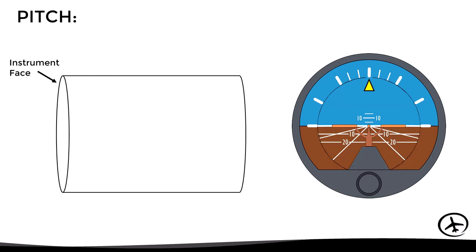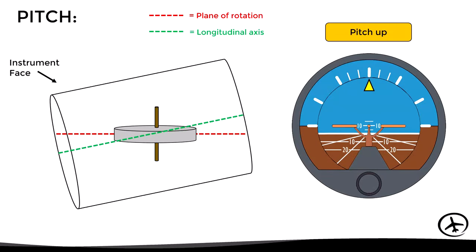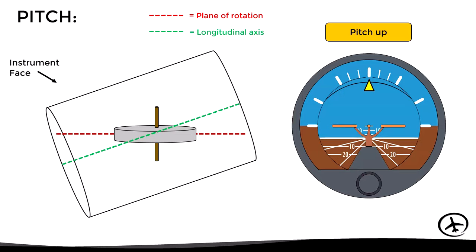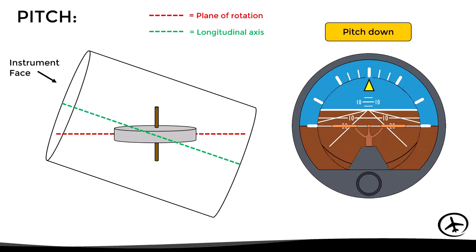Let's see how pitch attitude is measured using this gyro. On the right we see the instrument as the pilot would see it; on the left, a side view showing the gyro with its plane of rotation parallel to the horizon — indicating a pitch of zero degrees. When the aircraft pitches up, both the aircraft and the instrument pitch up while the gyro remains rigid in space, allowing the instrument to measure and show the pitch attitude — for example, 15 degrees nose up. The same principle applies for nose-down attitudes, such as 20 degrees nose down.